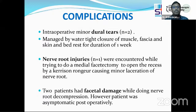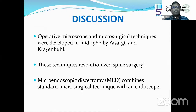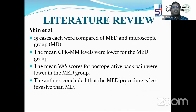Our results: 100% of patients had relief of symptoms. Average operating time was about 90 minutes. Average blood loss was low. 80% of patients had excellent results with no poor results. 80% of patients returned to their previous employment. Complications included minor dural tears (managed without repair), minor nerve root injuries, and facetal damage — none requiring major intervention. No wrong-level surgery occurred due to repeated C-arm confirmation. No recurrence to date. A comparative study by Shin et al. showed CPK-MM levels indicating muscle damage were lower in the endoscopic group, and pain scores were better than in the micro-discectomy group.